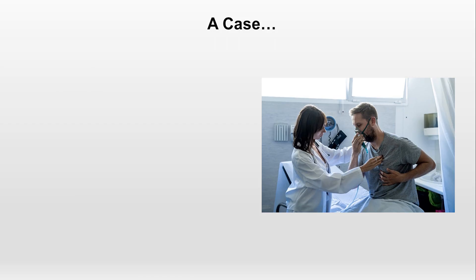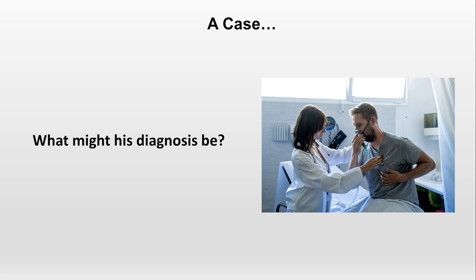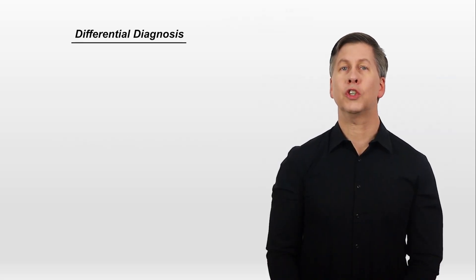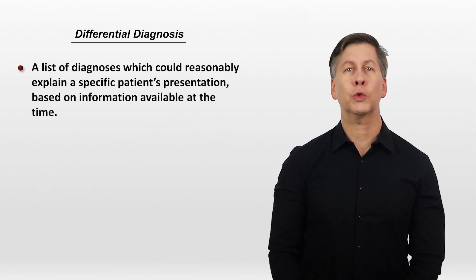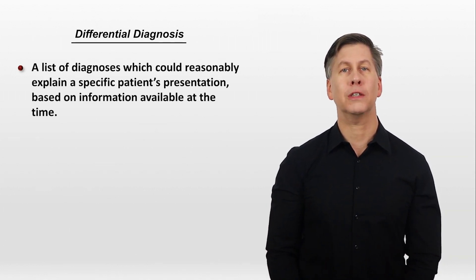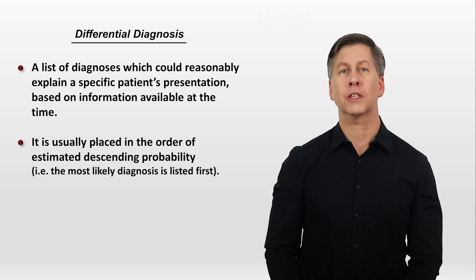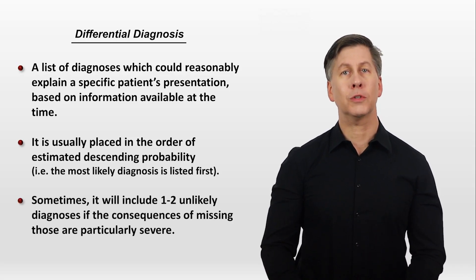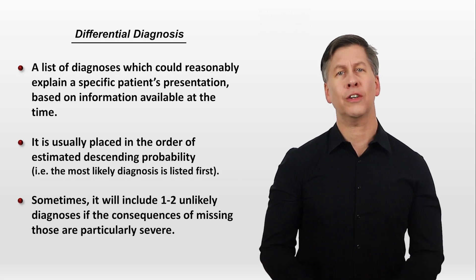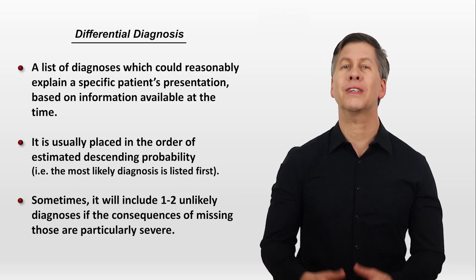It's at this point that we can now provide a meaningful, partially informed answer to the question of what might his diagnosis be. And to do that, I'll introduce the concept of a differential diagnosis. A differential diagnosis — often shortened to just the differential — is a list of diagnoses which could reasonably explain a specific patient's presentation based on information available at the time. It is usually placed in order of estimated descending probability, meaning the most likely diagnosis is listed first. Sometimes it will also include one to two unlikely diagnoses if the consequences of missing those are particularly severe.